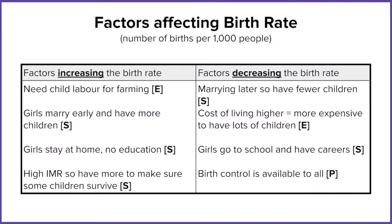Let's look at some of those factors, starting with birth rate. LICs tend to have an increasing birth rate, and it's usually because of a few different factors. For example, there's a high infant mortality rate — a lot of babies dying before they reach their first birthday. If you've got a lot of children dying very young, the normal response would be to have more children so there's a greater chance that at least some will survive into adulthood.